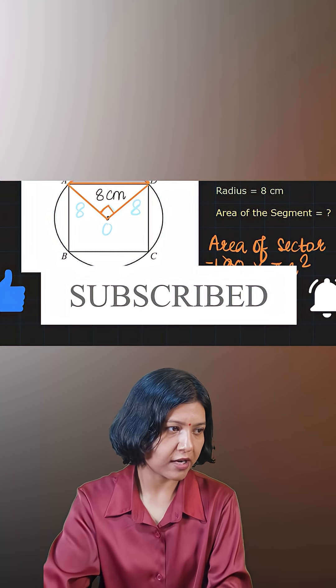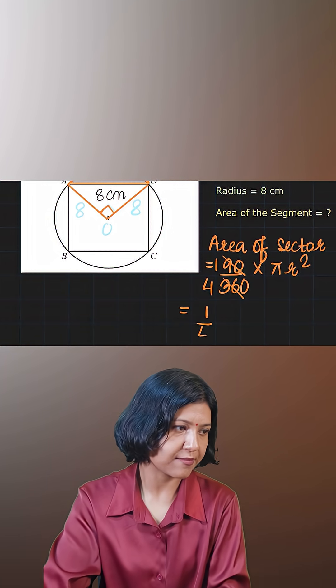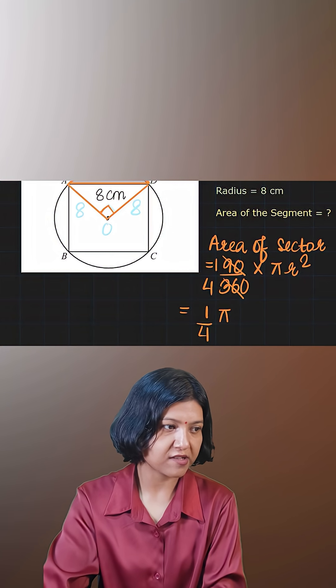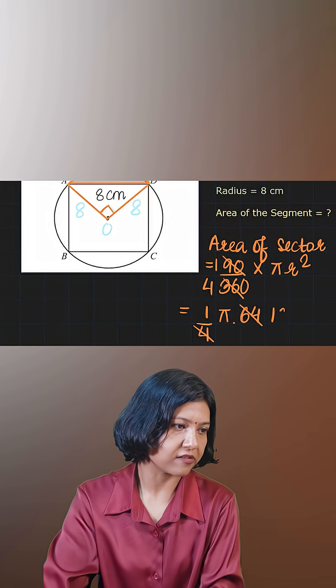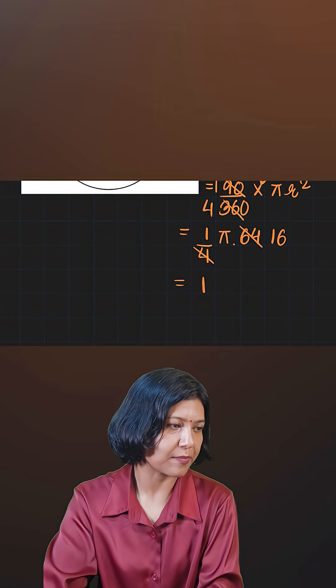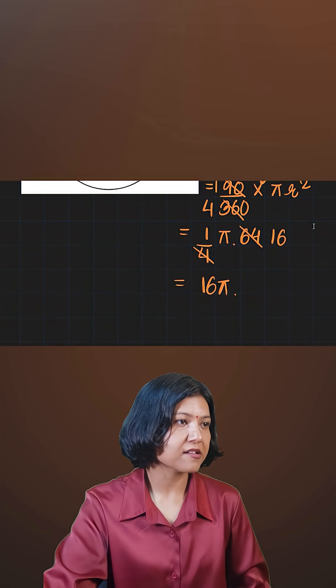I know 90 upon 360 is just one quarter, one fourth. So 1 out of 4 times pi times the square of the radius, which is 64. 8 into 8 is 64. 4 into 16 is 64. So I got the area of the sector as 16 pi. Okay, I'm keeping it like this.